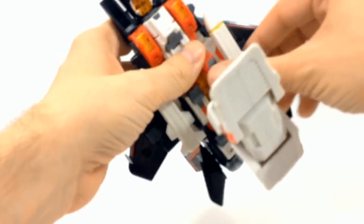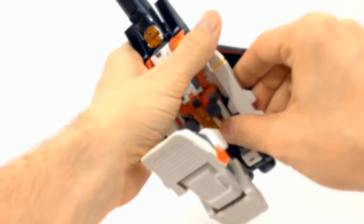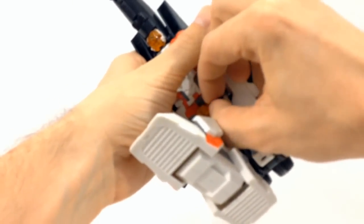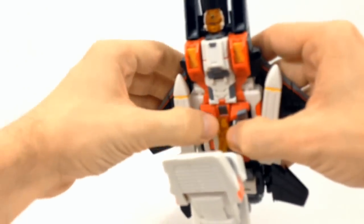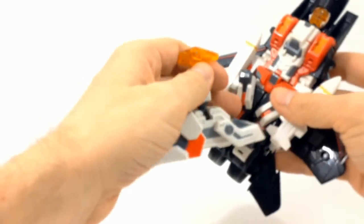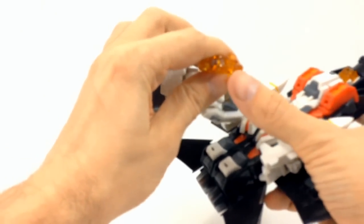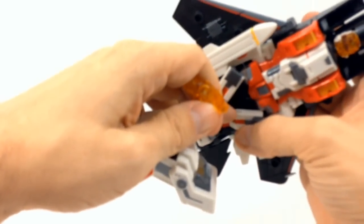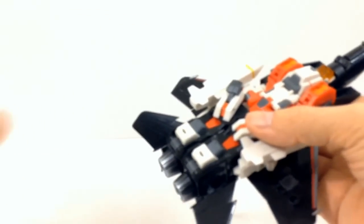All you need to do to attach it or detach it is just kind of pry apart these landing gears like this. And then it will just come right out and it just attaches by this little peg right here into the hole right here. And we'll set that aside.